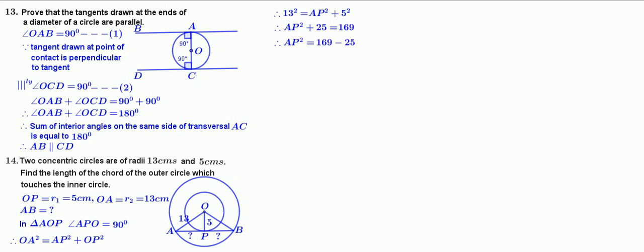That is AP squared plus 25 equal to 169. Therefore, AP squared equal to 169 minus 25. That is AP squared equal to 144. Therefore, AP equal to square root of 144. Root of 144 is 12. Therefore, measure of AP is equal to 12 cm.